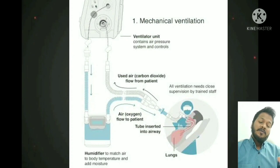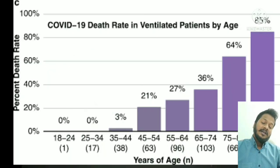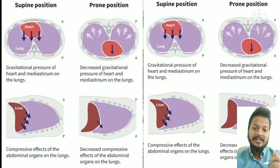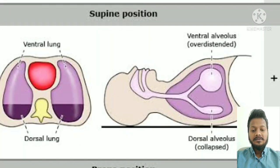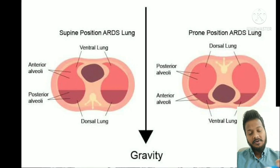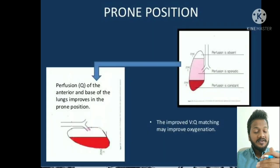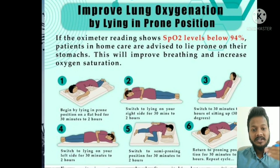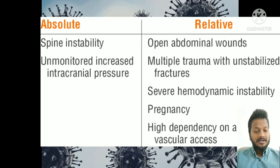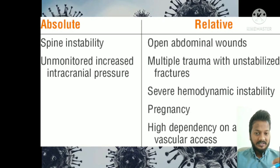Due to the effect of the heart and liver, the posterior part of the lung gets compressed, causing a VQ (ventilation-perfusion) ratio mismatch. When we put the patient in prone position, this effect of heart and liver is removed, correcting the VQ mismatch and improving saturation. The patient should change position every 30–120 minutes. Contraindications for proning include pregnancy, recent abdominal surgery, spinal instability, and facial trauma.